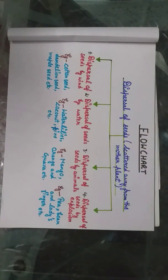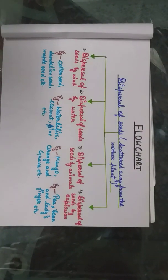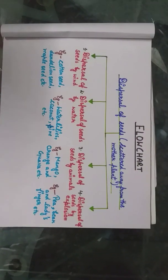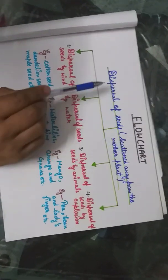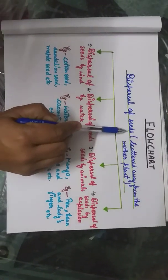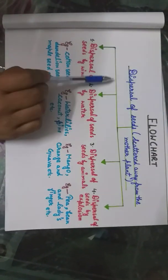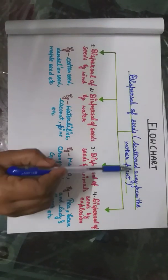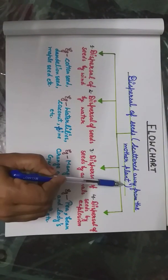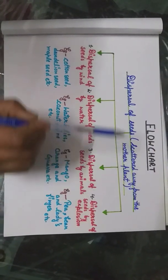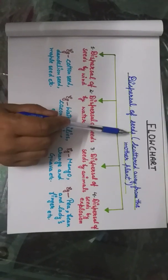Now let us start studying dispersal of seeds through a flow chart. This is the flow chart of the dispersal of seeds. Dispersal of seeds — a short definition — is when seeds are scattered away from the mother plant. This is known as the dispersal of seeds.